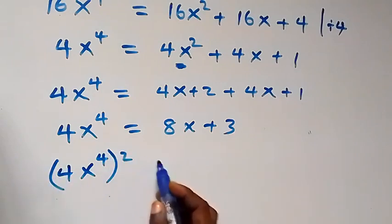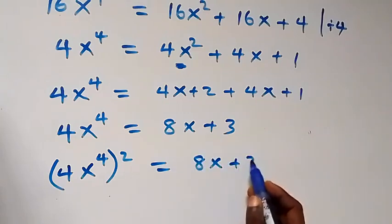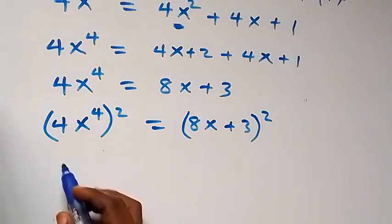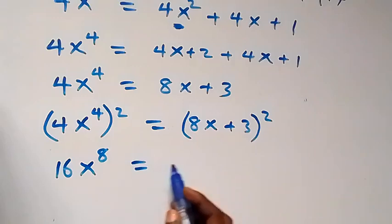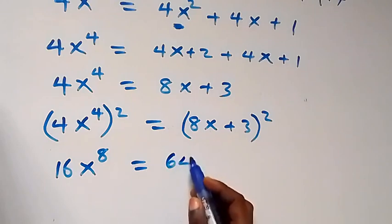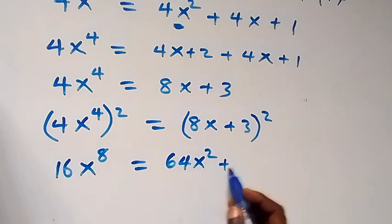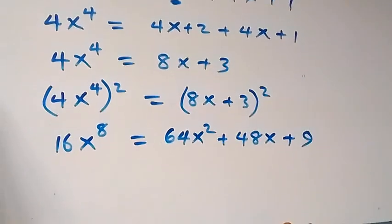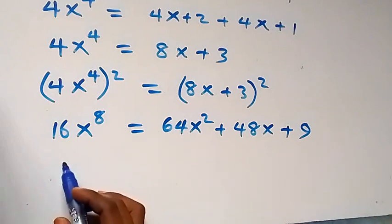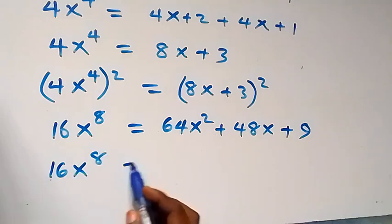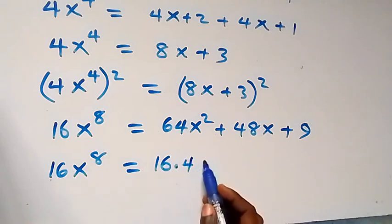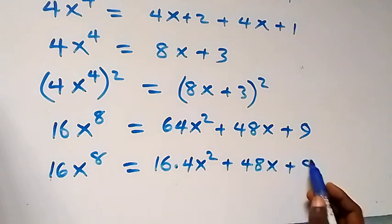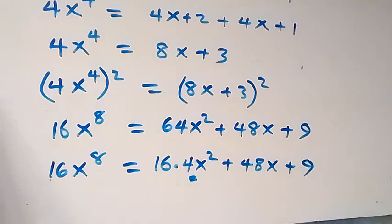Again we square both sides of this equation: (4x⁴)² equals (8x plus 3)², which gives us x to the 8th power. We expand: 64x² plus 2 times 8x times 3 plus 9. We can also separate 64 as 16 times 4, giving us 16x⁸. Then we replace 4x² here as 4x plus 2 from what we have earlier.